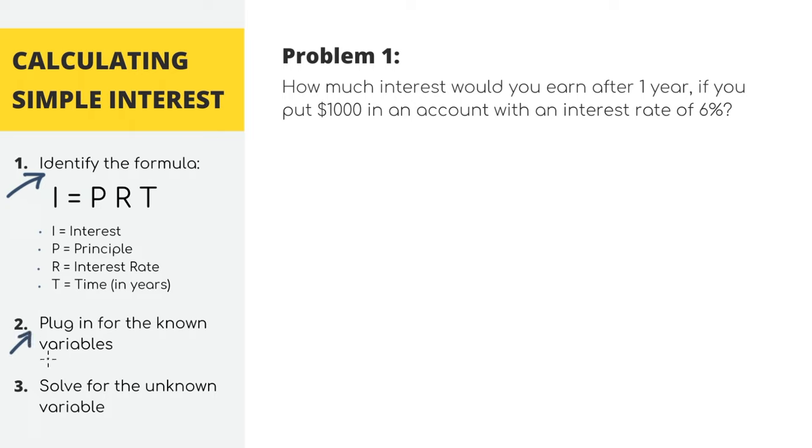So for a problem, we are trying to find I, which is the interest we'll earn. P is the principal, or in other words, the amount of money we first put in, which is $1,000. R is the interest rate, which is 6%. Now, this is super important, make sure you always convert the percent to a decimal first. Just move the decimal to the left two spots. So 6% as a decimal is 0.06. And T is the time the money is in the account, which is one year.